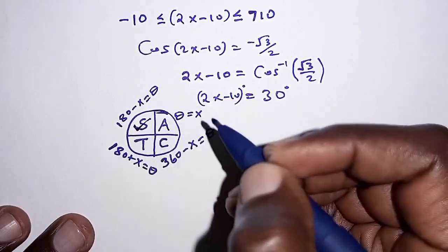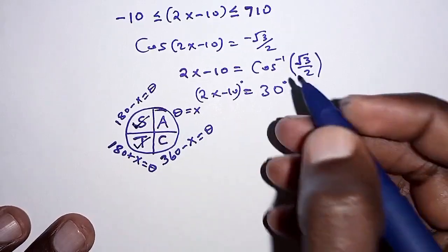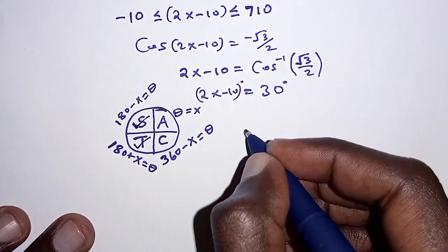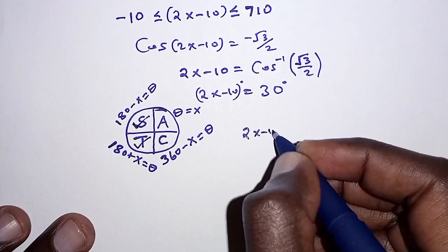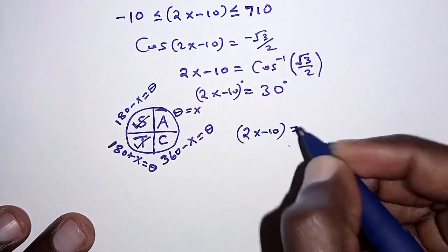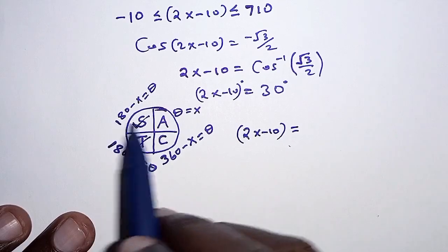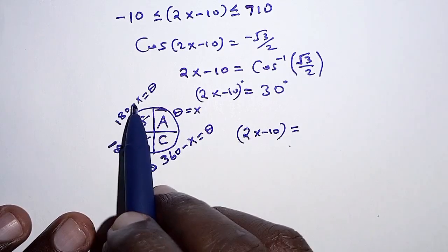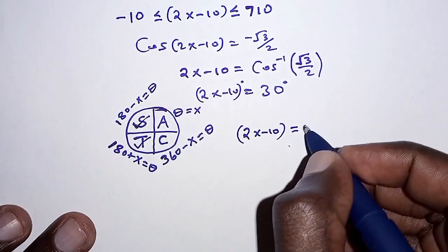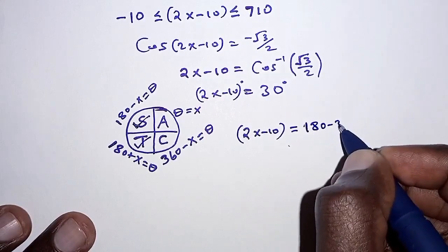And that is second quadrant and the third quadrant. And therefore, we can do the listing, we have 2x minus 10 is equal to 180, that is from this quadrant, 180 minus the acute angle, and that is 180 minus 30.